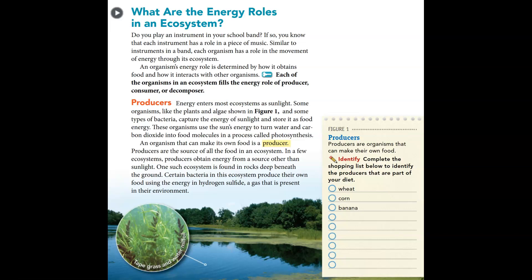Producers: energy enters most ecosystems as sunlight. Some organisms, like plants and algae shown in figure one, and some types of bacteria, capture the energy of sunlight and store it as food energy. These organisms use the sun's energy to turn water and carbon dioxide into food molecules in a process called photosynthesis. An organism that can make its own food is a producer — meaning food is made inside their body. Producers are the source of all the food in an ecosystem.